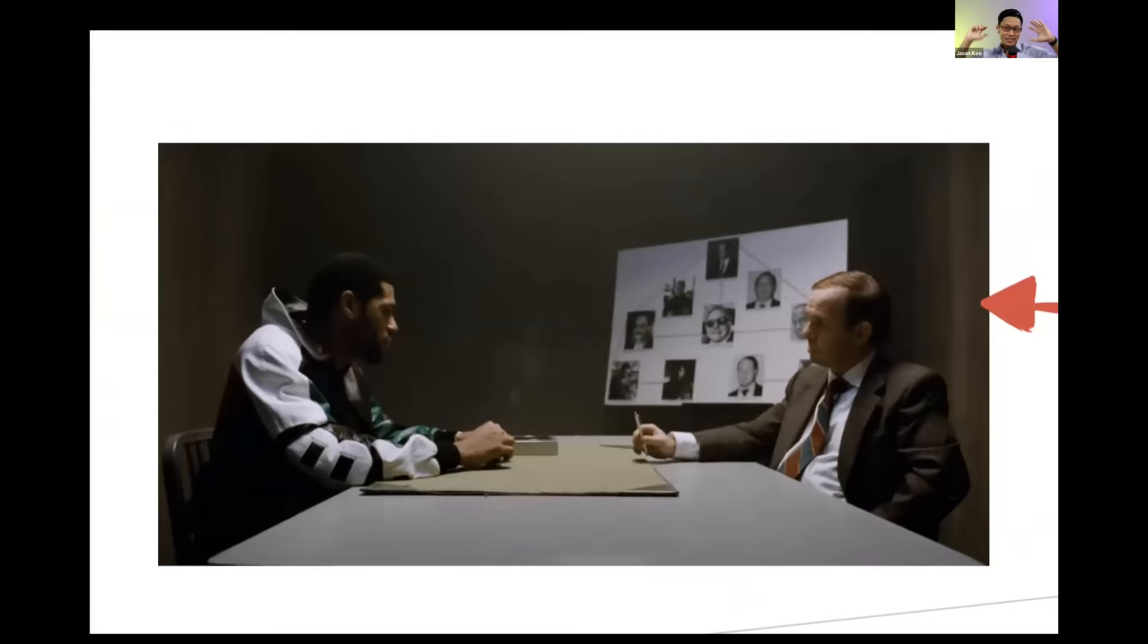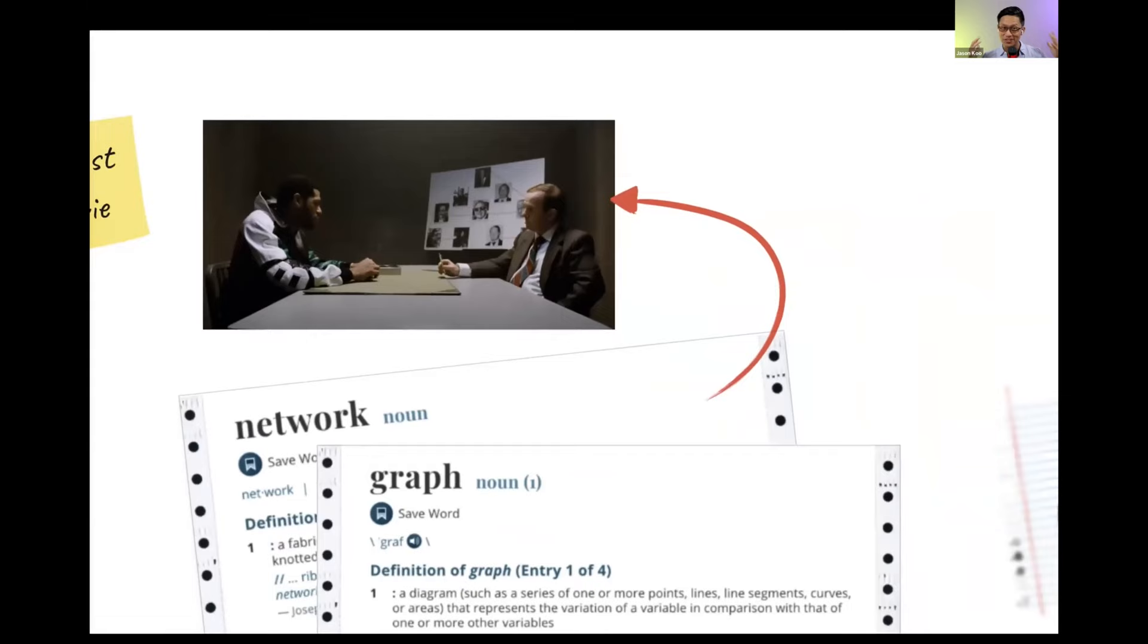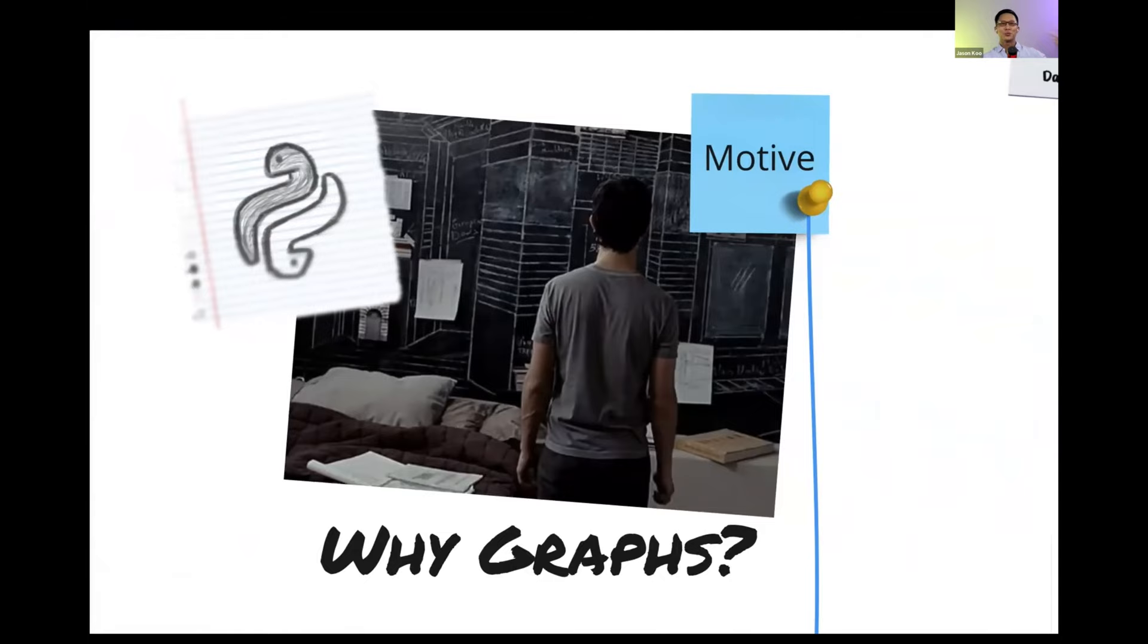So I've always known this as an evidence wall, but in researching for this talk, I have since discovered that it goes by many, many terms. I think the official Hollywood trope name is string theory, presumably because of the strings attaching to objects. But one of my favorites is crazy wall and obsession wall, which are two other terms that are very useful for finding content related to evidence walls.